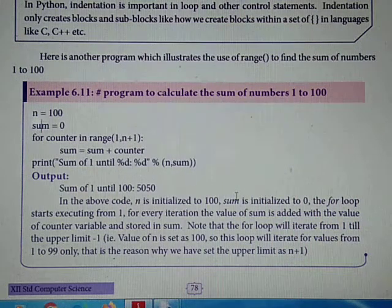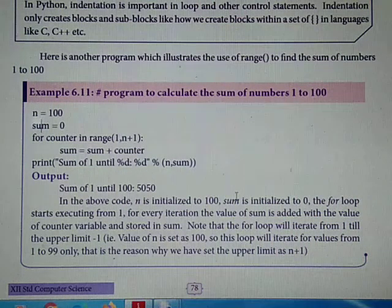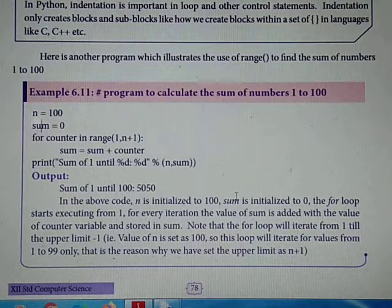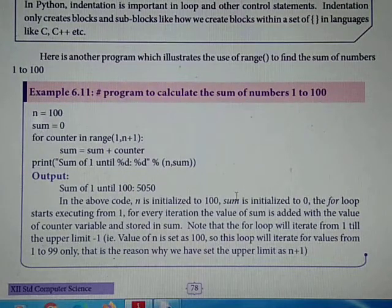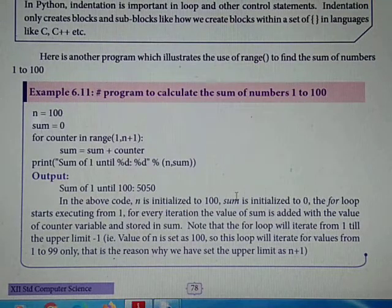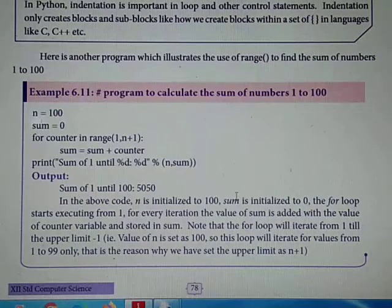Good morning students. Now we are discussing the 6th chapter of 12th standard computer science, control structures. In the last class we discussed while loop and for loop. Both are entry check loops. First we check the condition, if the condition is true the statements will be executed.